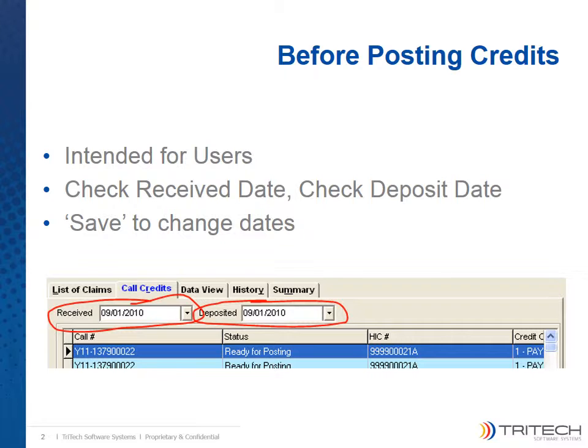These dates will populate with information from the remittance file, but those automatically determined dates can be overridden if you desire. If you make a change to either date but do not wish to post the credits at this time, please use the save function to save the new dates with the remittance.